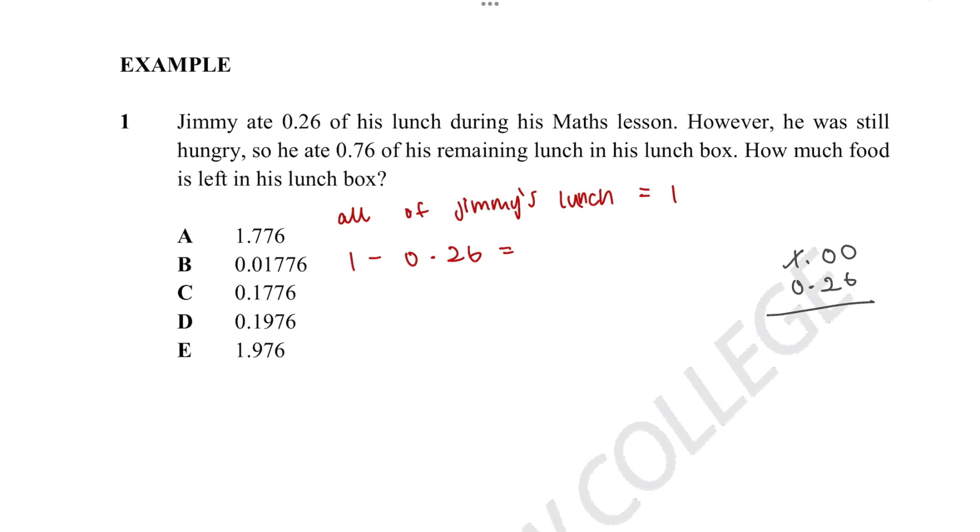So then we go, and that becomes 9 because you have to carry it over here. And that'll be 10 minus 6, which is 4. 9 minus 2, which would be 7. And then 0 minus 0 is 0. So the answer is 0.74.